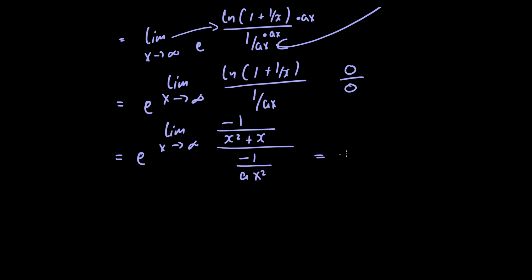Simplifying this expression gives us e raised to the limit as x approaches infinity of a times x divided by x plus 1. All we've done is multiply a times x squared by negative 1 and x squared x by negative 1 down here and then cancel the factor of x.